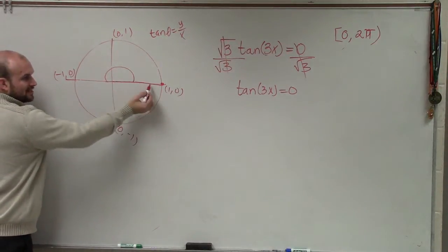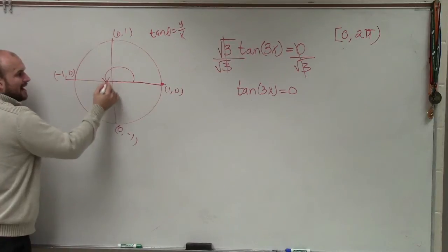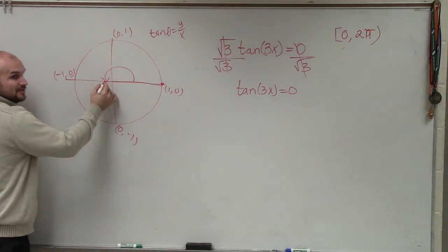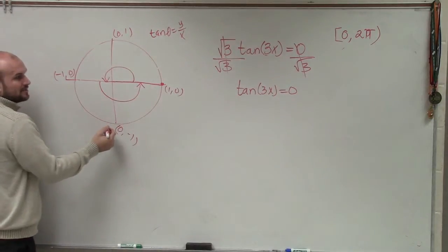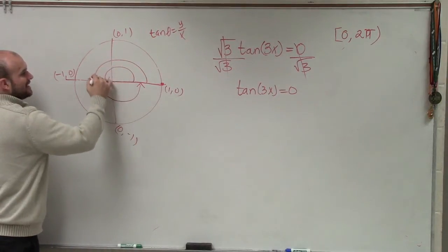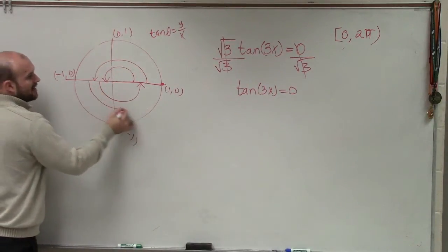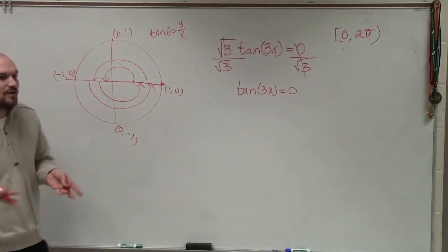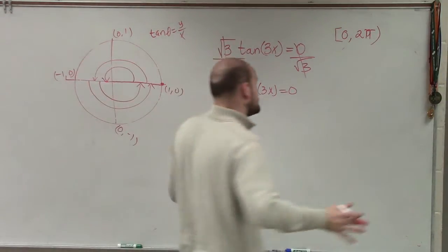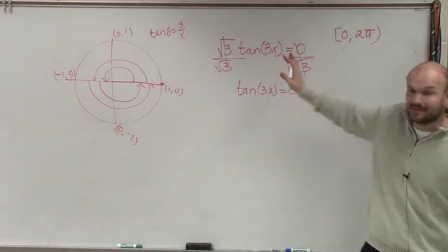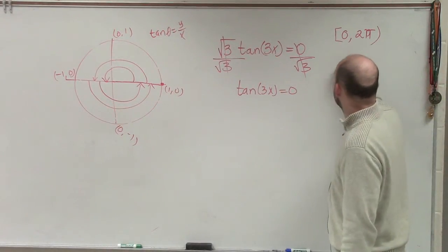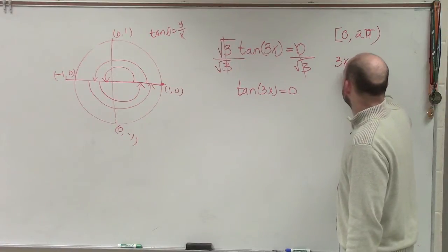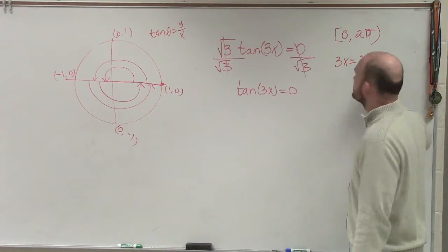If our first angle is at 0, the next angle is at π. If I was going to continue this indefinitely, I could go to the next angle, which would be 2π, then add π again, 3π, add π again, 4π. So therefore, if I wanted to find all of the solutions, even though that's not what it's asking me, I would say 3x equals π times r.